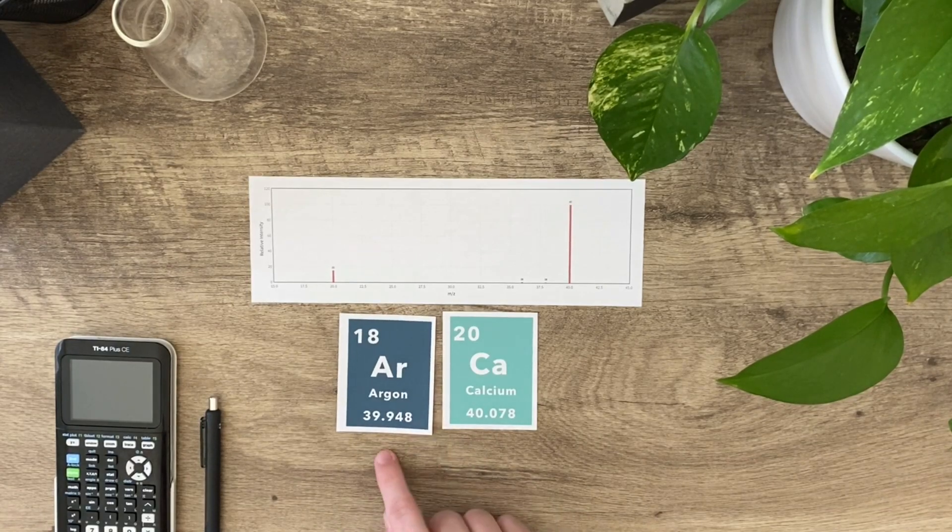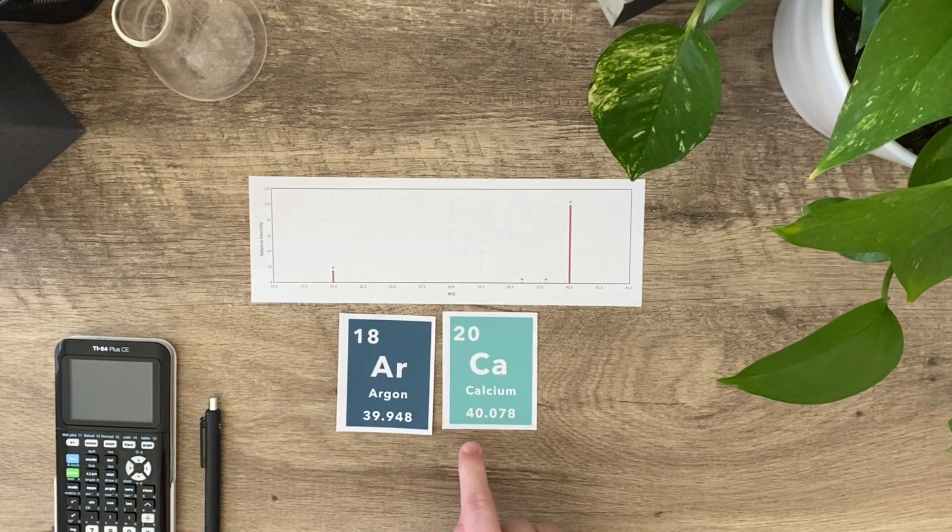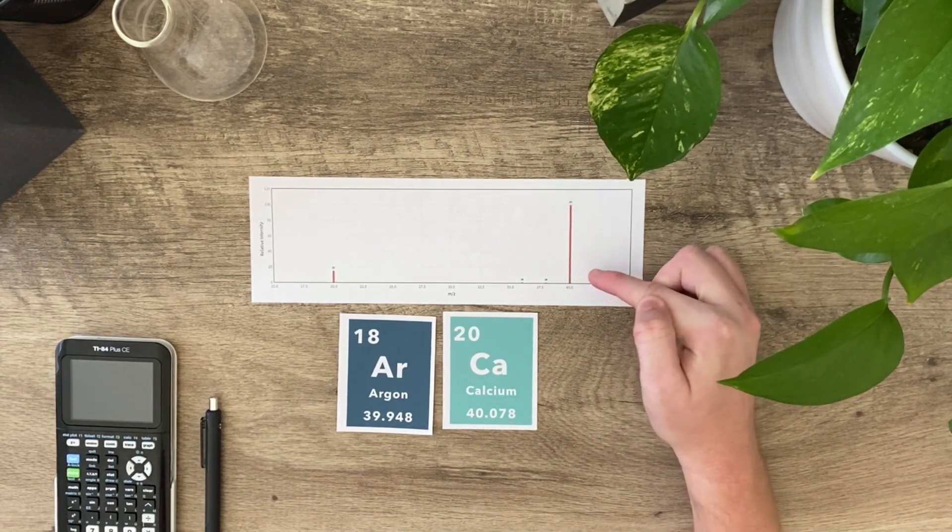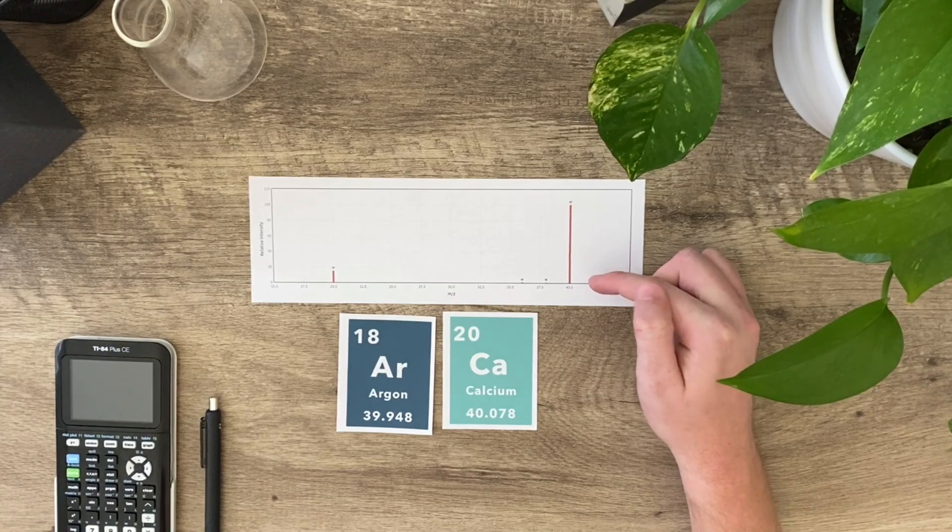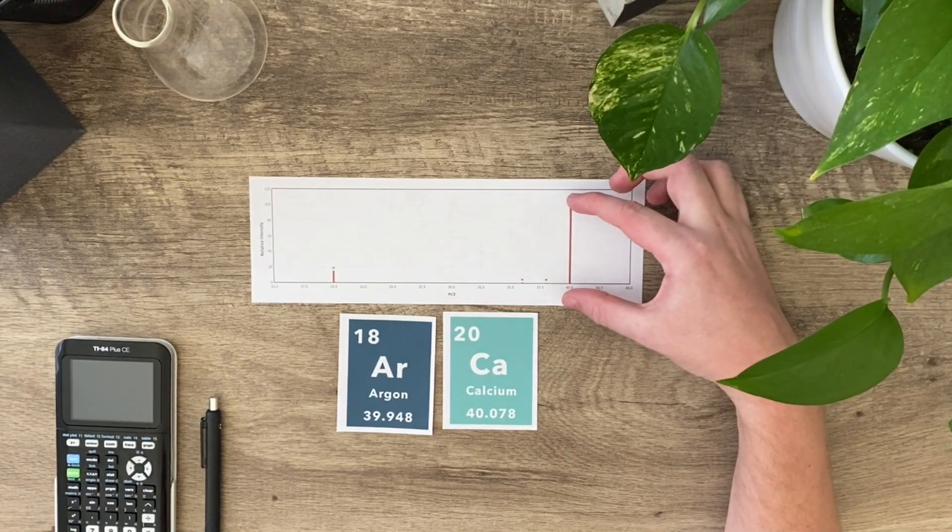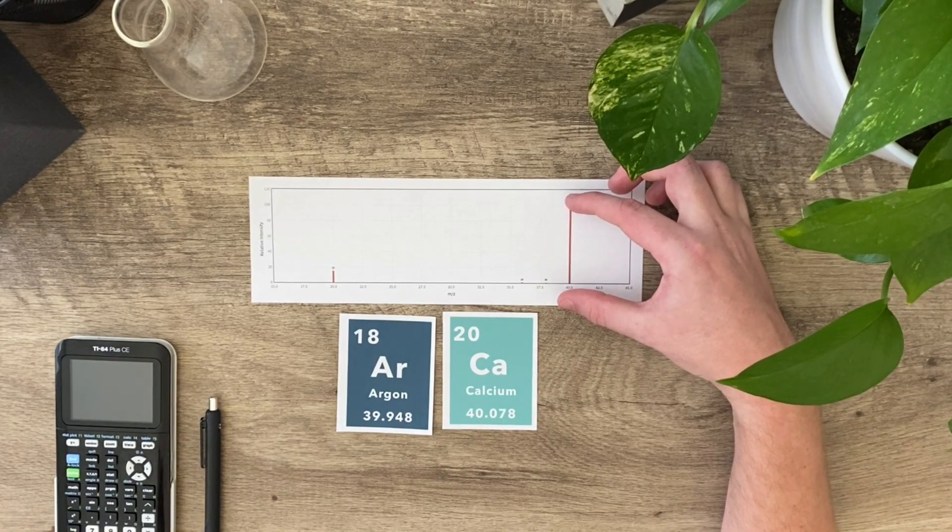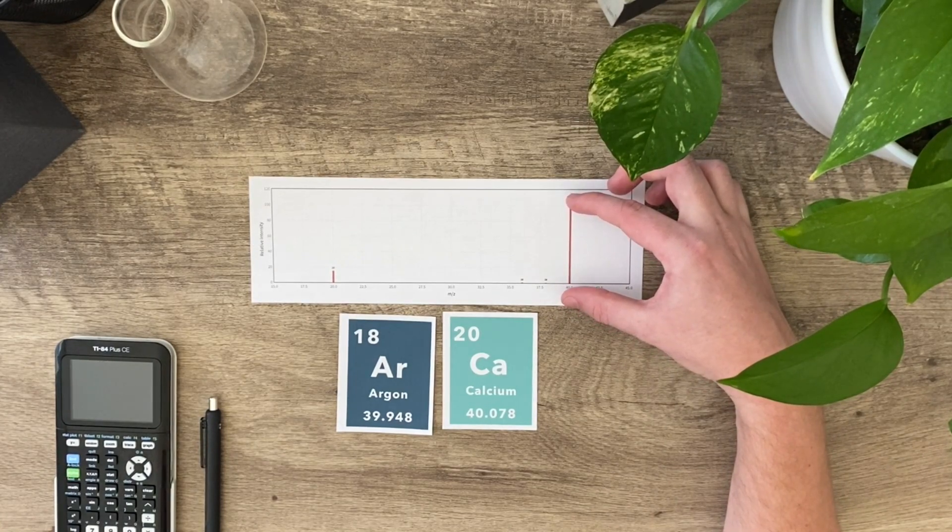Calcium and argon are a little trickier because they're only deviating by a tenth. I've got 40 and I've got 39.9. How do I know if it's calcium versus argon? The question is based on the intensity. Most of it is at 40, so I'm assuming that the intensity is exactly 40.